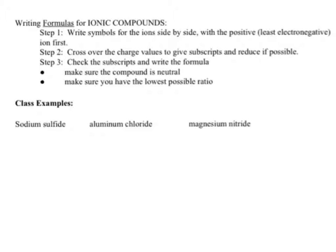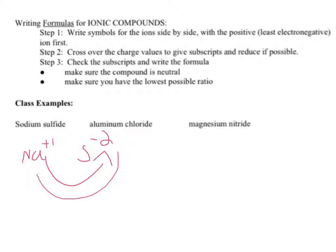First example: sodium, Na, has an oxidation number of plus one. The other element, sulfur, S, has an oxidation number of minus two. You crisscross: the one goes over to sulfur and the two goes over to sodium. The formula is written as Na₂S — two as the subscript for sodium, and since sulfur's charge magnitude is one, just write S.